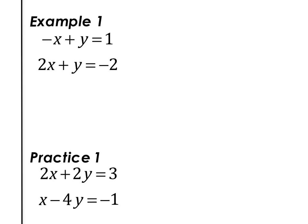Example one: we are going to solve using these steps. Neither equation is set up as x equals or y equals. So step one, we're going to solve one of the equations for one of the variables. I'm going to take the first equation and write it in slope-intercept form to get it as y equals. So I'm going to add x to both sides. Students seem to prefer solving for y, likely because they're used to writing in slope-intercept form. So this becomes y equals x plus one.